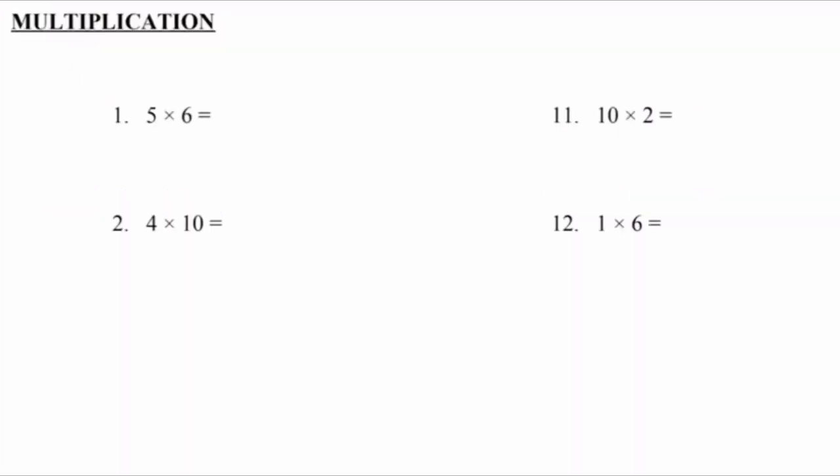The second topic is multiplication, and it's asking us to multiply the numbers below. Number 1: 5 times 6. This can also be referred to as 5 groups of 6. Let's draw it out.